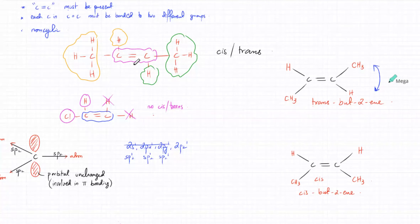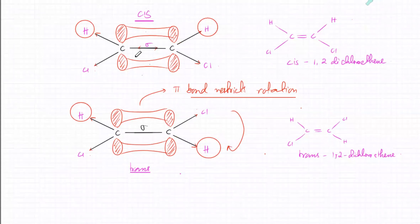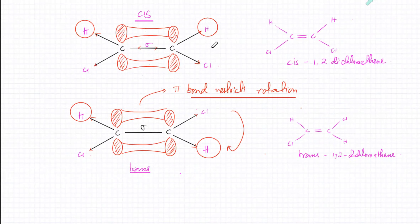Whenever you have a double bond, there's going to be stereoisomerism — the molecule will have two different shapes. When you have a double bond in the middle, rotation is not possible. The sides cannot rotate independently; you can't twist one side when you have a double bond. So either the two H's are pointing in opposite directions or they're pointing in the same direction.